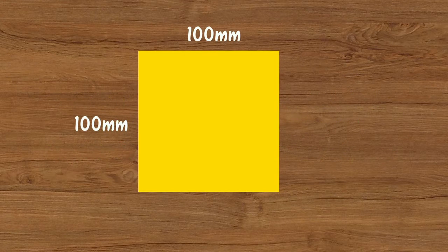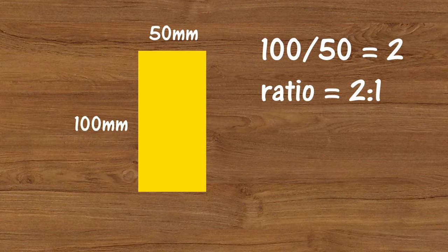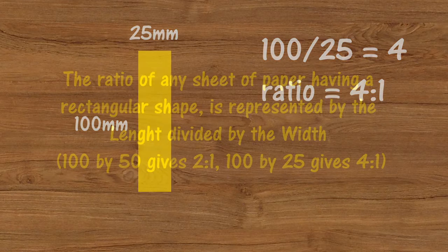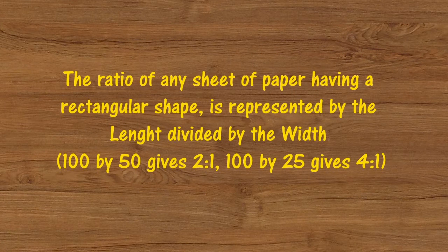Let's take a square sheet of paper with dimensions 100 mm by 100 mm, and divide it into two equal parts by a longitudinal cut. The length will be double the width, which means the ratio of this shape is 2 to 1. This comes from a simple division: 100 divided by 50 equals 2. Let's fold the paper again — now the length is 4 times the width, 25 mm. The ratio will be 100 divided by 25 equals 4, therefore 4 to 1. In conclusion, the ratio of any rectangular sheet of paper is represented by the length divided by the width. So 100 by 50 gives 2 to 1, and 100 by 25 gives 4 to 1.